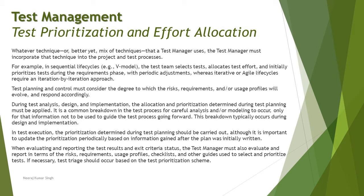During test planning and control, you must consider the degree to which risk, requirements, and usage profiles will evolve, and respond accordingly. Consider all factors contributing to your overall test prioritization and apply them at the right time. During test analysis, design, and implementation, the allocation and prioritization determined during test planning must be applied. Right from when you start analyzing requirements and writing test cases, you implement the prioritization decided in the planning phase — giving priority to critical requirements first, creating test cases for those first, and getting ready for execution.